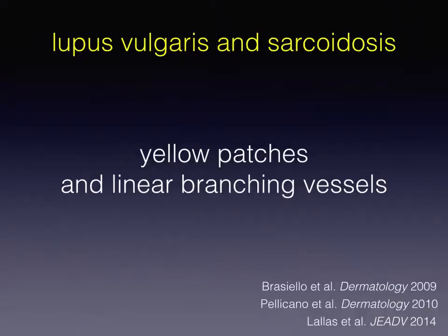Here is another papule of lupus vulgaris, again displaying a yellow background color and linear branching vessels under dermoscopy. This is a lesion dermoscopically very similar to the previous one, but with a different diagnosis — in this case, sarcoidosis. So, the pattern of yellow patches and linear vessels is highly suggestive of a granulomatous skin disease, but insufficient to differentiate between sarcoidosis and lupus vulgaris.